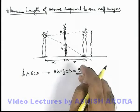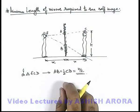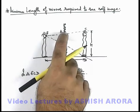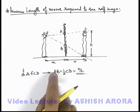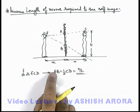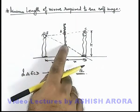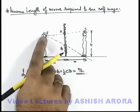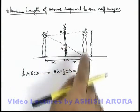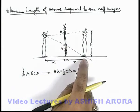This is the minimum length of the mirror required. If it is placed at position AB, then through this mirror the observer will be able to see their complete image.